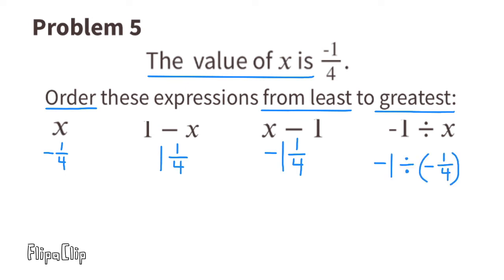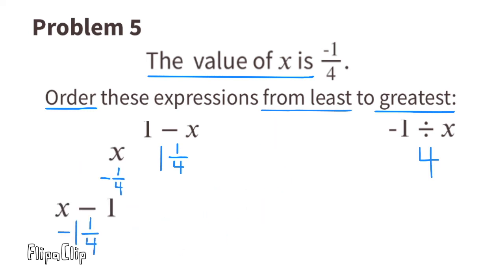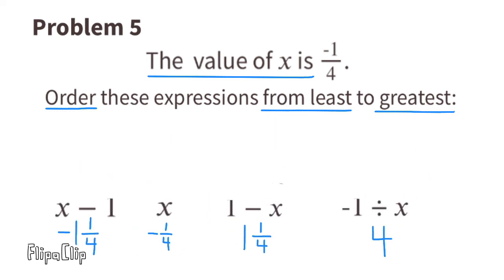Finally, negative one divided by x is negative one divided by negative one-fourth. A negative divided by a negative gives a positive. We multiply by the reciprocal of one-fourth, which is four, so negative one divided by x equals positive four. Ordering from least to greatest: x minus one, x, one minus x, and negative one divided by x.